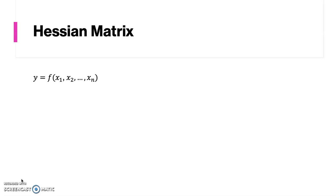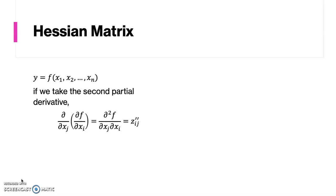If we have a multivariable function where y is a function of x1, x2, and so on, then taking the second partial derivative by differentiating the equation twice — the symbol says that you derive the equation with respect to xj as the first derivative, and then derive the result with respect to xi. You can also symbolize it in the other notation shown here.